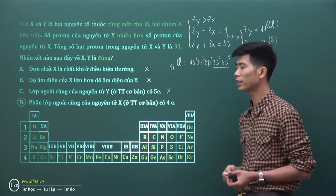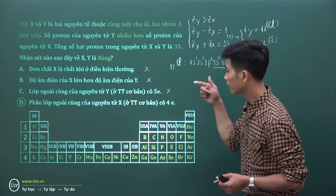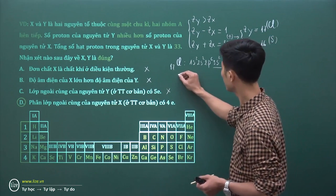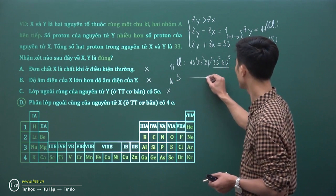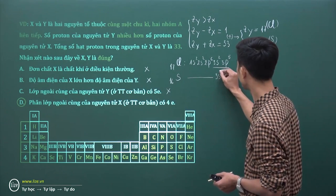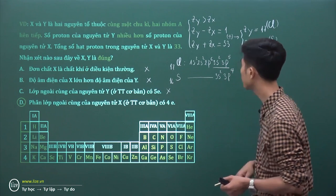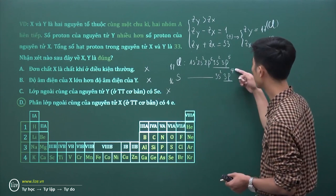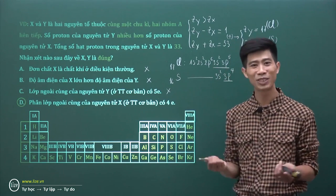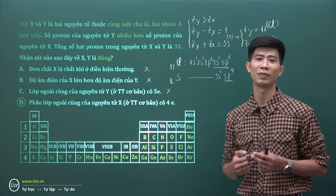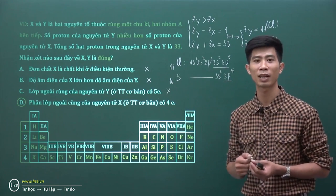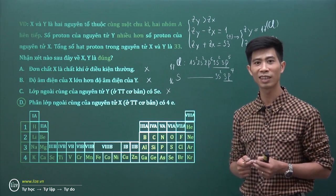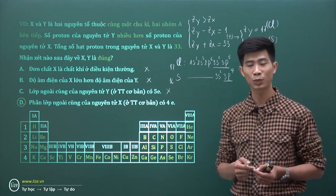Đáp án D: phân lớp ngoài cùng của nguyên tử X ở trạng thái cơ bản có 4 electron. X là Lưu Huỳnh Z=16, cấu hình 1s²2s²2p⁶3s²3p⁴. Phân lớp ngoài cùng là 3p⁴ có 4 electron - đúng. Vậy đáp án của chúng ta chính xác là đáp án D. Muốn trả lời câu hỏi thì phải đi xác định nguyên tố trước, xác định sai là không thể trả lời đúng.